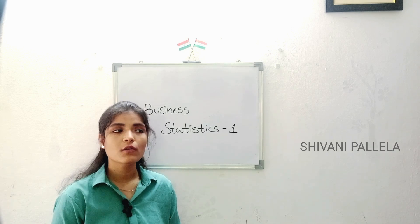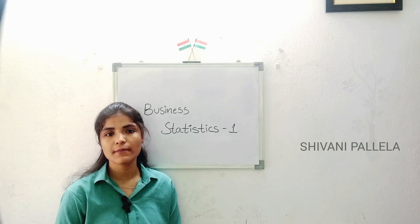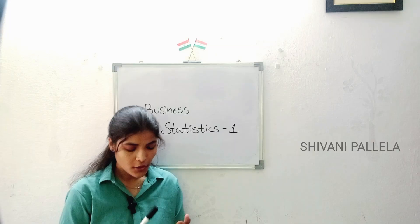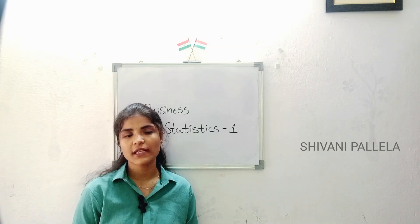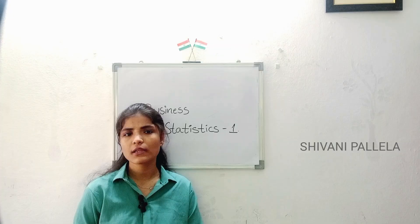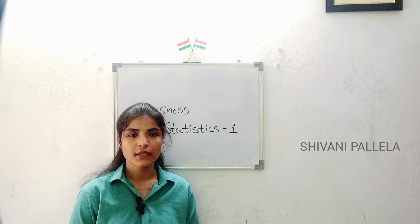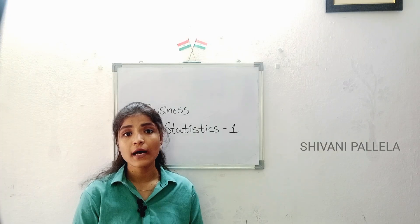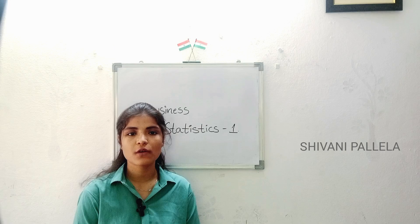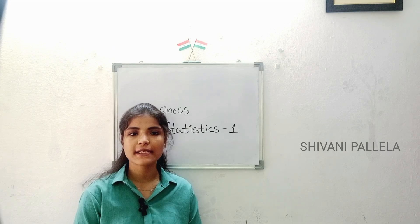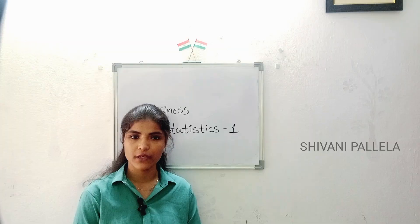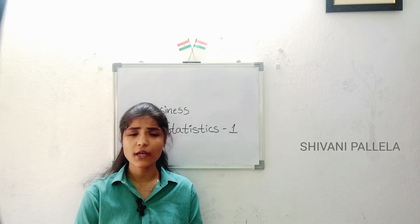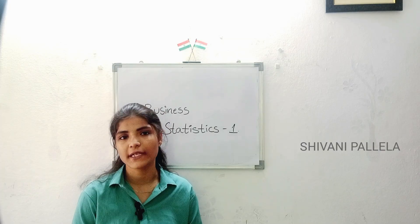Mostly you should concentrate on the problematic method. In this Business Statistics subject, the most important unit is Measures of Central Tendency. In that unit you will learn mean, median, mode, arithmetic mean, geometric mean, and harmonic mean — all the concepts in Unit Number Three of Statistics One. In this video we are going to discuss the arithmetic mean. Don't skip the video and watch till the end so you understand the concept in a better way.